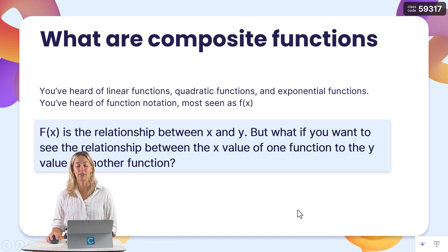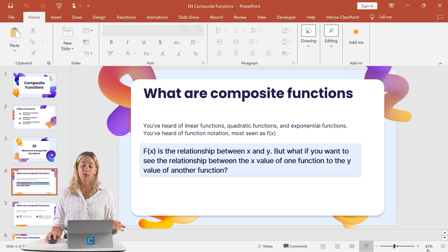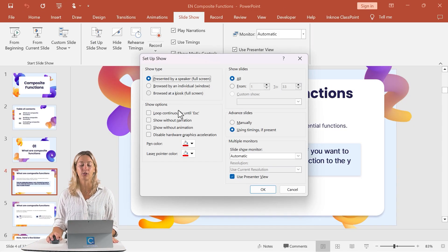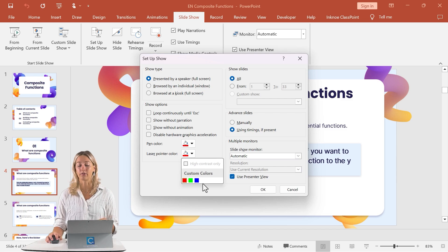Besides changing the color of the laser pointer, which is located all the way back in edit mode, in slideshow, setup slideshow, you have the option of one of these three colors.